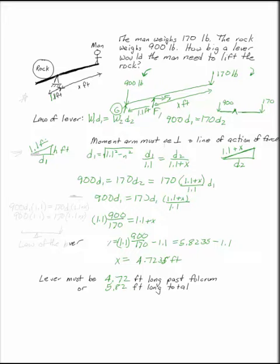Let's look at this for just one second right here on this line. If you rearrange this to be 900 times D1 times 1.1 equals 170 D1 times 1.1 plus x, we can cancel the D1s on both sides. You get 900 times 1.1 equals 170 times 1.1 plus x.